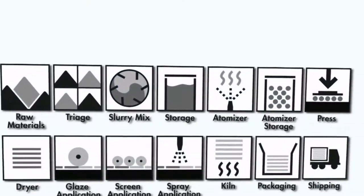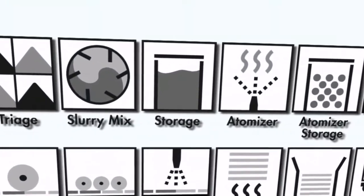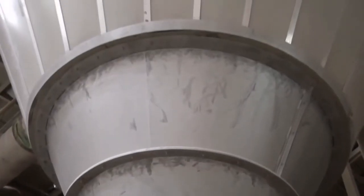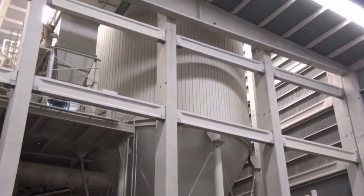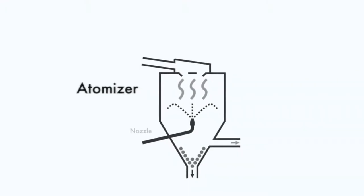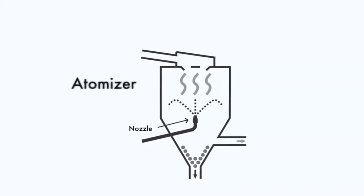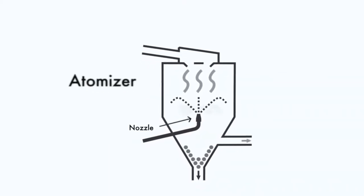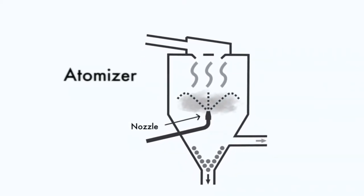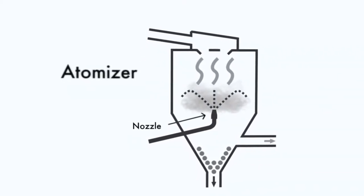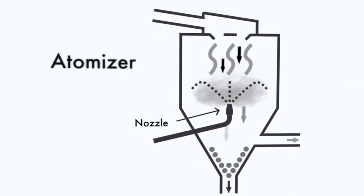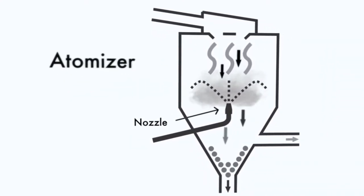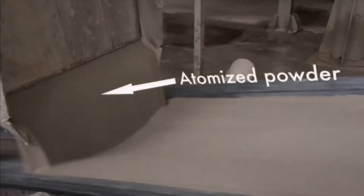The slurry is then transferred to large underground storage tanks, then fed into an atomizer. The atomizer is equipped with a nozzle that sprays the slurry into the middle of a large tank fed with a current of hot air. As the slurry becomes airborne, it rapidly dries to form atomized powder.